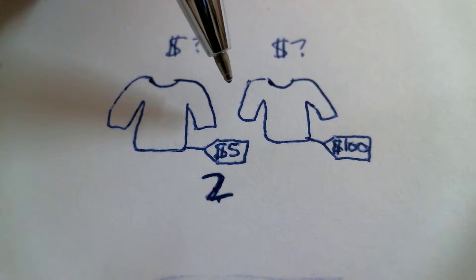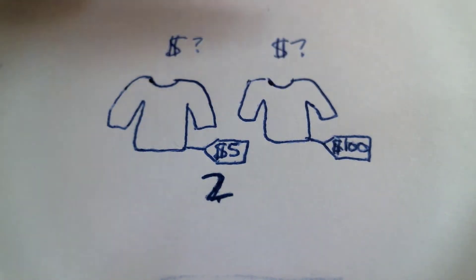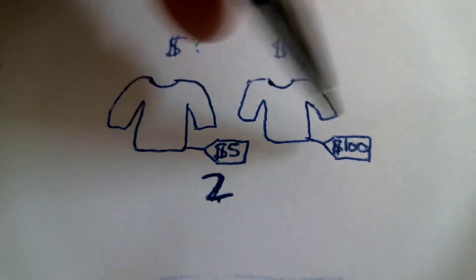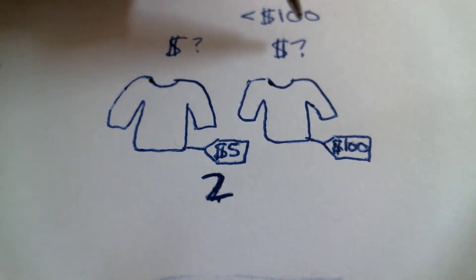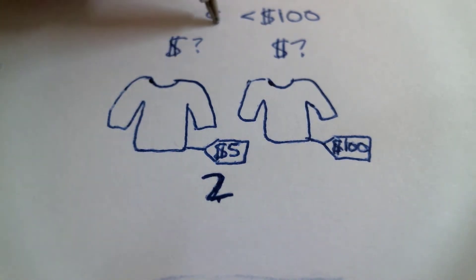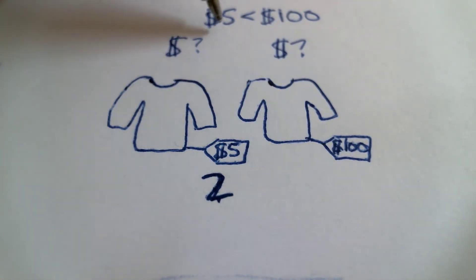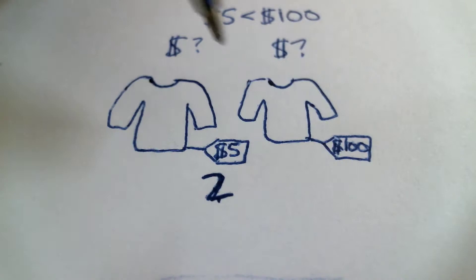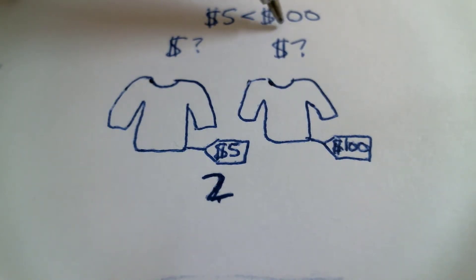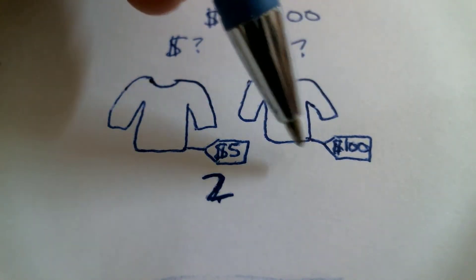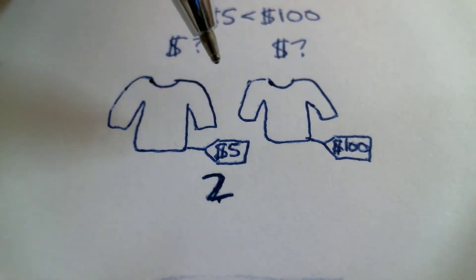Which shirt costs more — this shirt or this shirt? Which one costs more? This shirt costs more. This shirt costs $100, that's more than this shirt which costs $5. So this shirt costs more than this shirt. Which shirt is more expensive — this shirt that costs $100 or this shirt which costs $5? This shirt is more expensive. It costs $100. This shirt only costs $5, so this shirt is more expensive than this shirt.